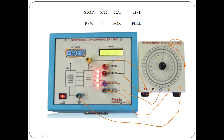On the control unit you have options to increase and decrease values, run and stop the motor, and a set button. Using these buttons you can set various functions: RPM mode or step mode, half step or full step, forward or reverse direction. Everything is set using these buttons and the same settings are shown on the display. Once you press run, the motor rotates and you observe the changes on the disk and tabulate the readings.